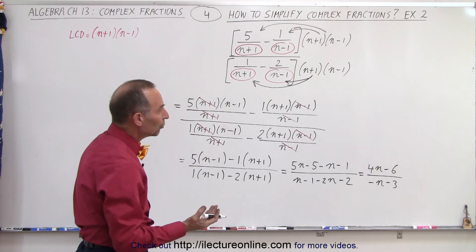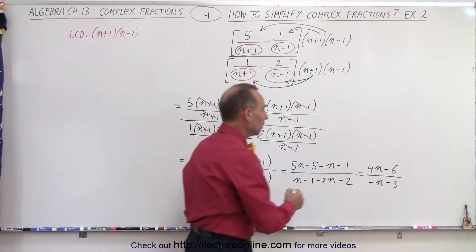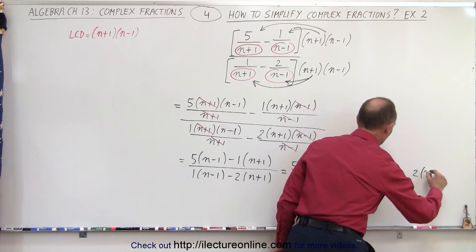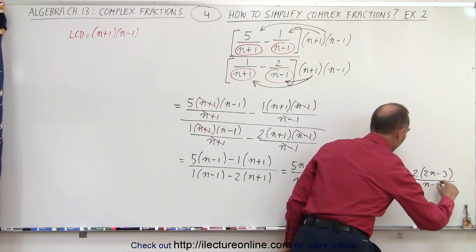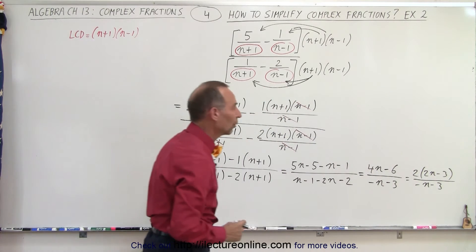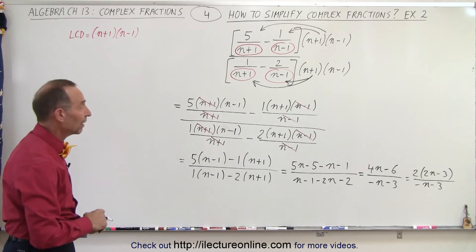All right, and we could factor out a 2 out of the numerator. We could end up writing it like this. 2 times 2n minus 3 divided by minus n minus 3. And so that would then be the most simplified form.